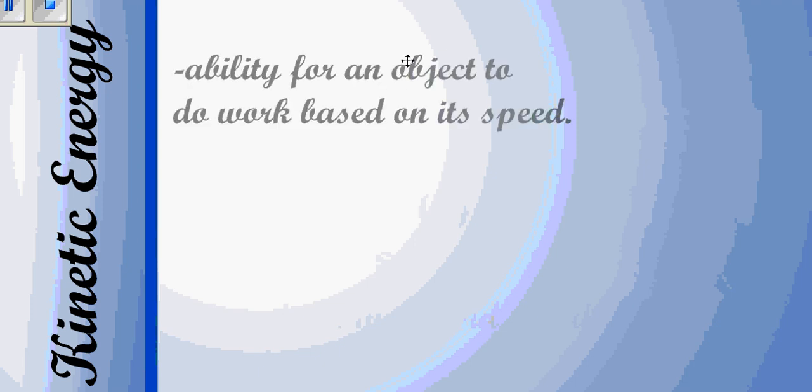This video discusses kinetic energy. Kinetic energy is the ability for an object to do work based on its speed. So the faster it's going, the more kinetic energy it will have. If it has no speed, if it's at rest, it has no kinetic energy. And when we say it's doing work, that means it can use this energy to change either the position or speed of another object.